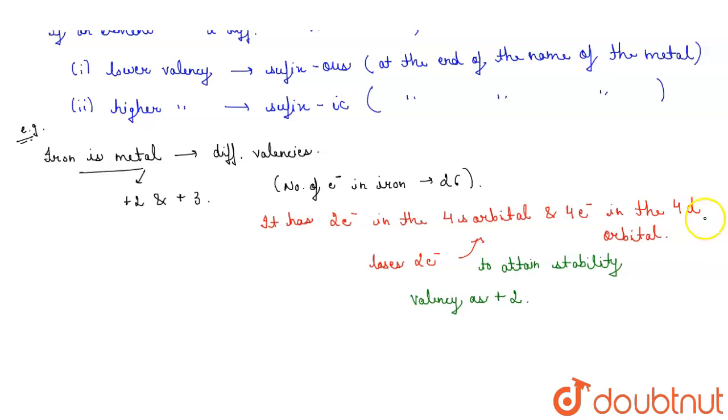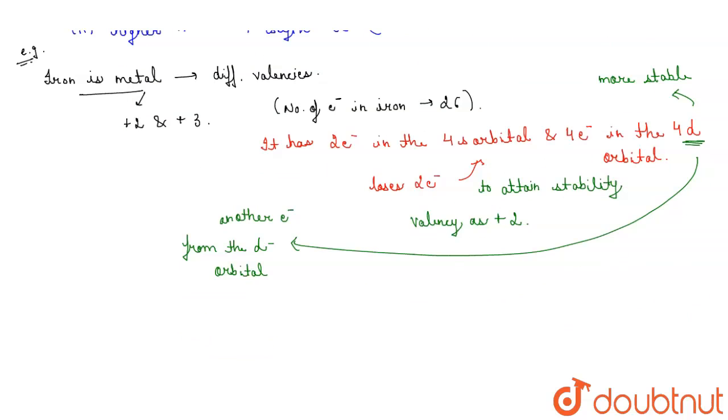Now in the d orbital, which is more stable, it loses another electron from the d orbital, making valency as +3.